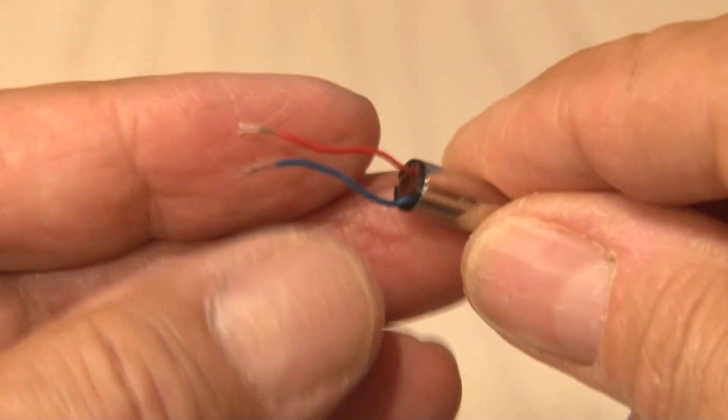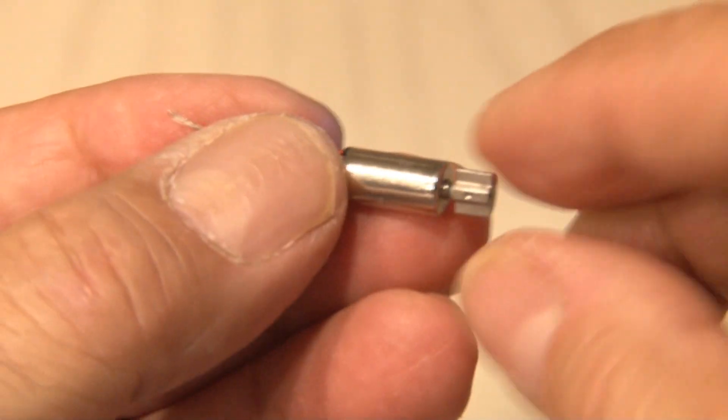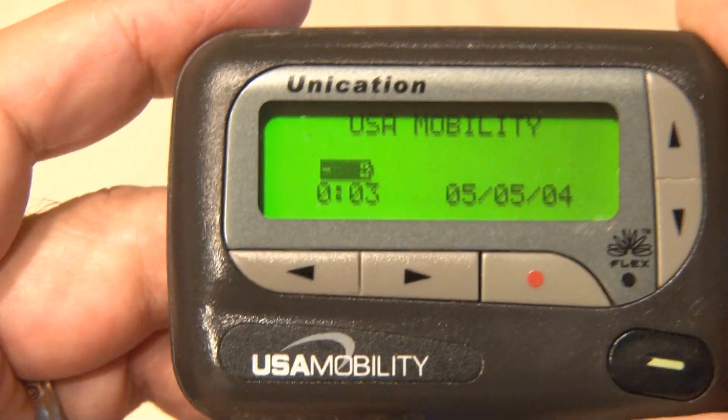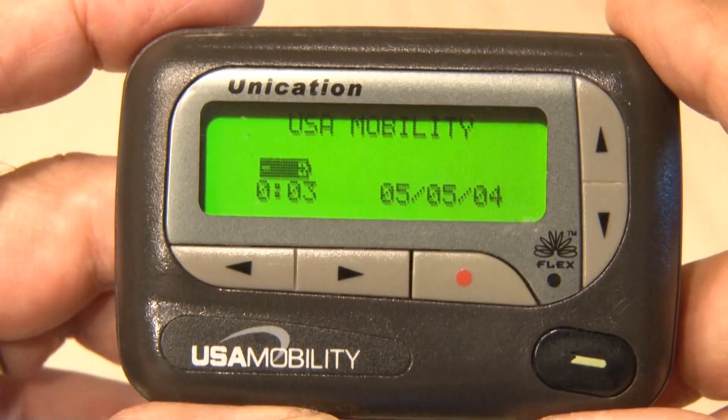Now it's time for a small vibrating motor. The one I have has two wires on it. You can find these in a lot of devices like an old pager. When you flip these on they vibrate. In this case we'll pop the screws out.